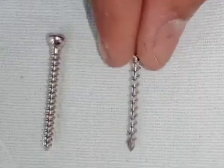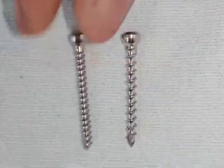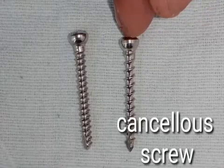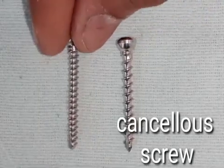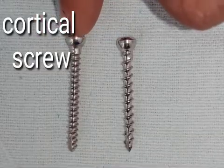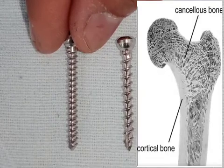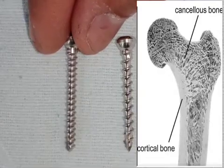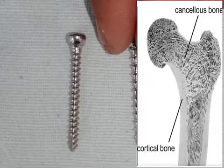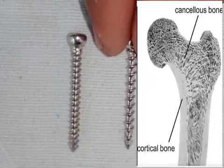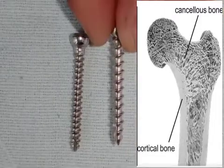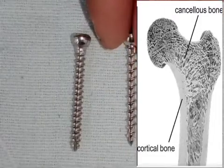So which do you think gives a better purchase on the bone? Definitely it is the one with the broader threads. This screw is called the cancellous screw, and the other is called the cortical screw. If the bone is strong and of good quality, you use the cortical screw, which is for the outer cortex of the bone. But if the bone is of weaker strength and you are using the screw inside the cancellous or spongy part of the bone, you use the cancellous screw.